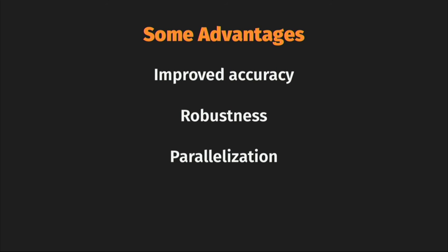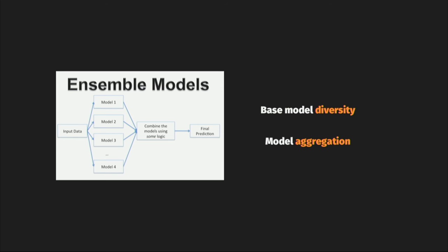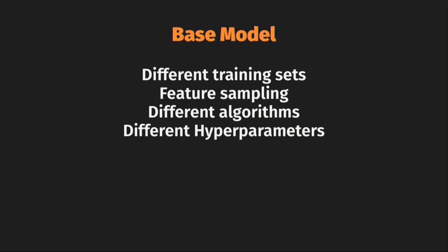In its essence: you have input data, you create different kinds of models — it's very important that they are different kinds, not the same — and you combine them using some logic to make your final prediction. What are the advantages? It definitely improves accuracy most of the time. It becomes very robust and your output variance reduces. Because you can do things in parallel, it lends itself to parallelization and you can work much faster. Two important things: you need base model diversity, and there must be some aggregation method.